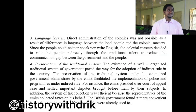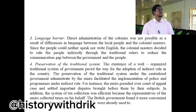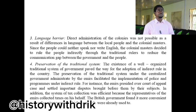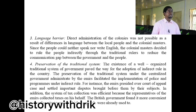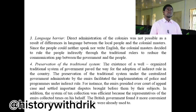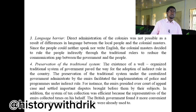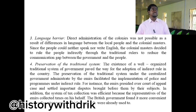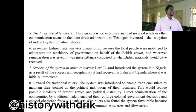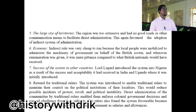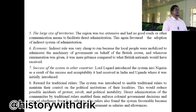Direct administration would involve the employment of qualified and competent personnel to administer the region effectively. Point number three was language barrier. Direct administration was not possible as a result of the differences in language between the local people and the colonial masters. Point number four was preservation of the traditional system. The existence of a well-organized traditional system of government helped pave the way for the adoption of indirect rule. Number five was the large size of the territories — the region was too extensive and had no good roads or other communication means to facilitate direct administration.